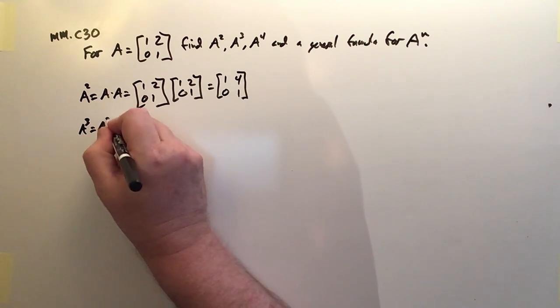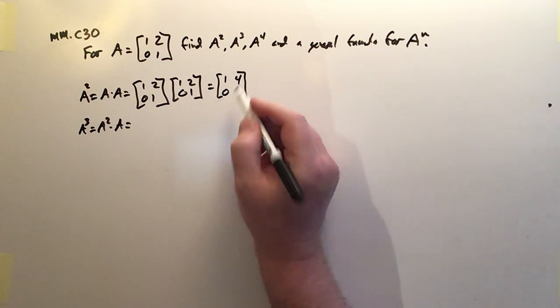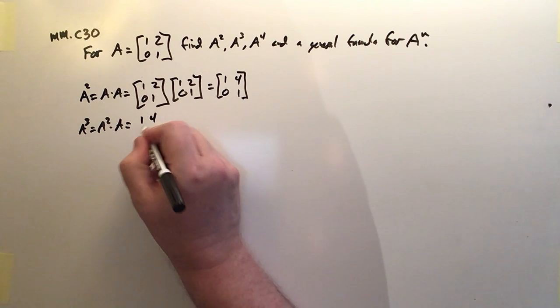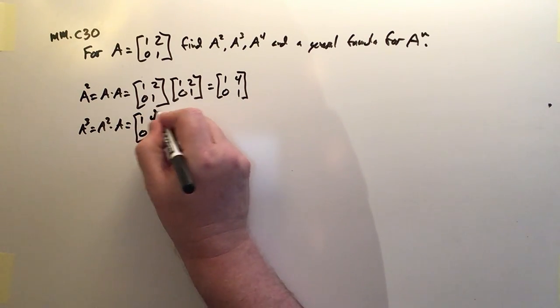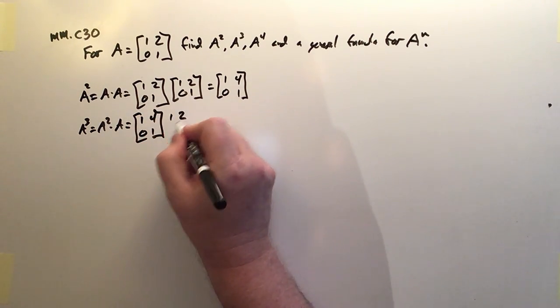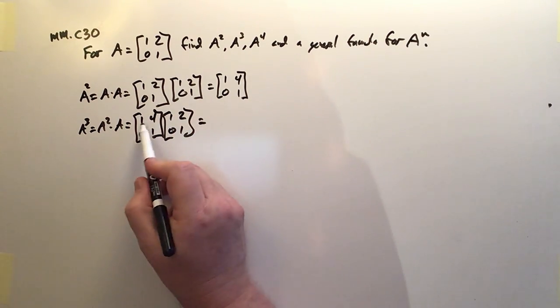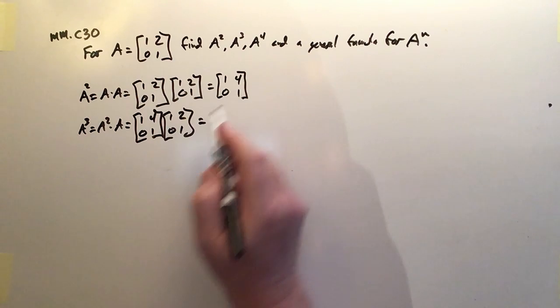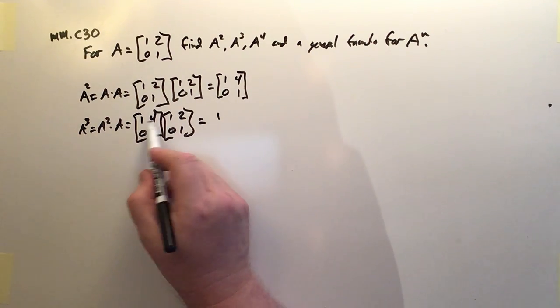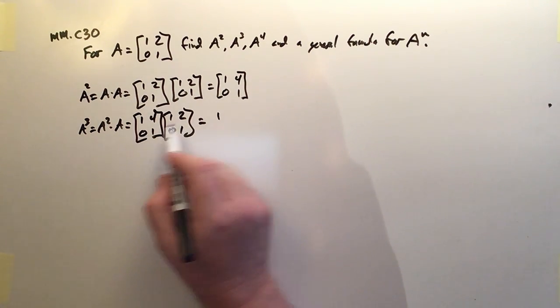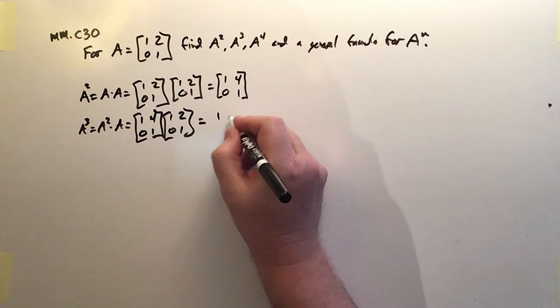A cubed, then, is going to be A squared times A. And we already know A squared is 1, 4, 0, 1. And I'll multiply that by another A, 1, 2, 0, 1. And once again, 2 by 2 matrices aren't so bad. 1, 4 times 0, 1 is 1. That's the upper left-hand corner. 1, 4 times 2, 1 is 2 plus 4. That's 6.